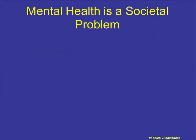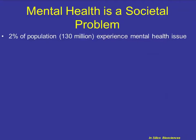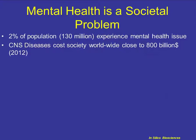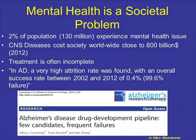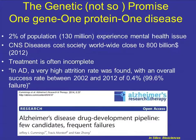As background, mental health is a serious societal problem. About 2% of the population experience mental health issues. In general, both psychiatry and neurology cost society about $800 billion per year, and that is probably going to grow over $1 trillion. Treatment is often incomplete, and especially in Alzheimer's disease, we had a very bad success rate. Between 2002 and 2012, the success rate was only 0.4% — one drug out of 234 attempts was uniquely successful.